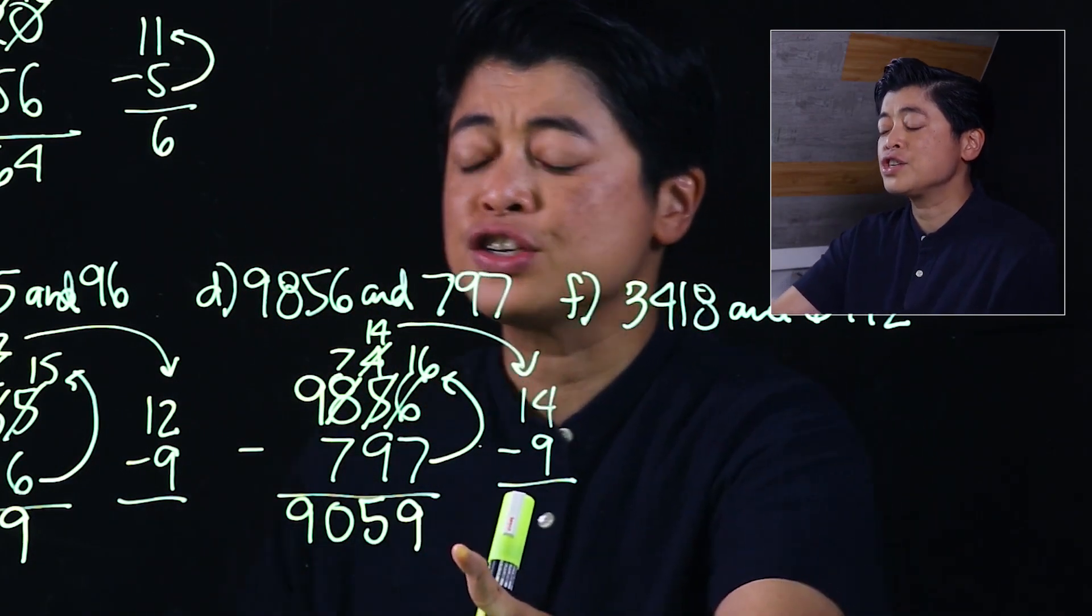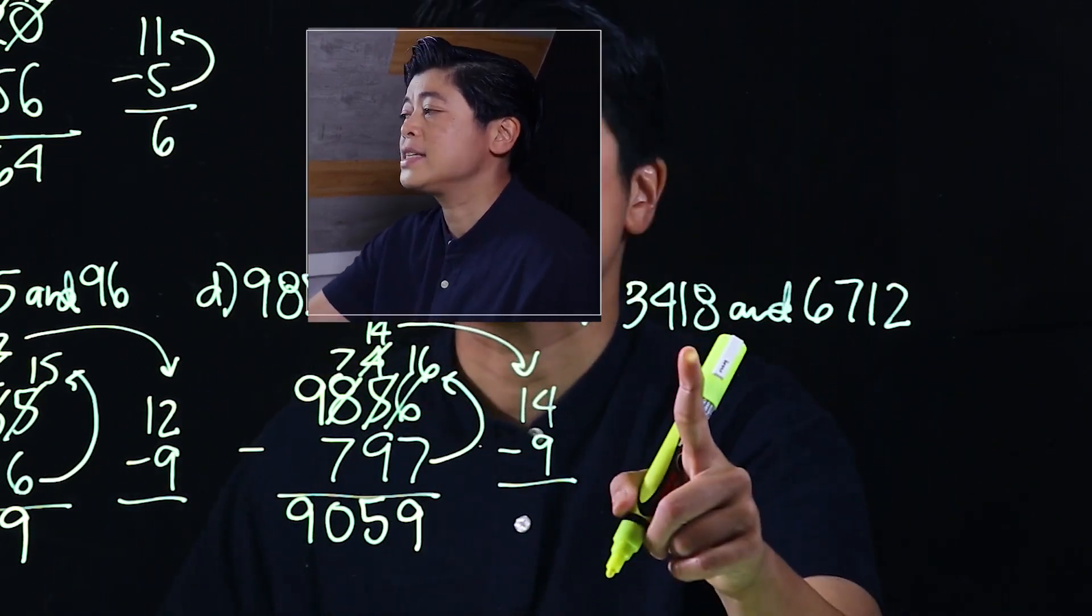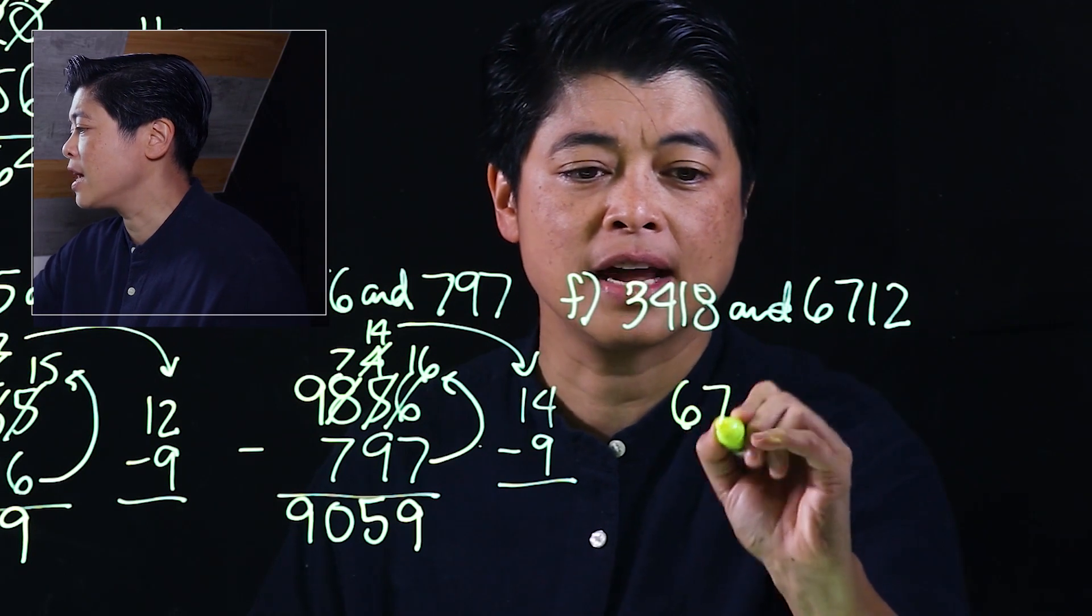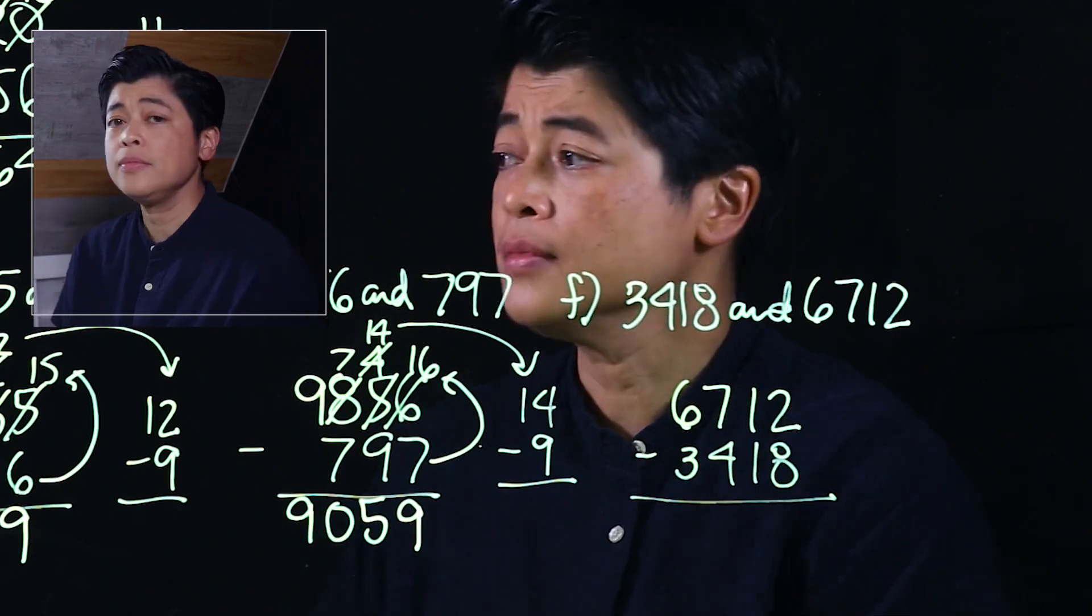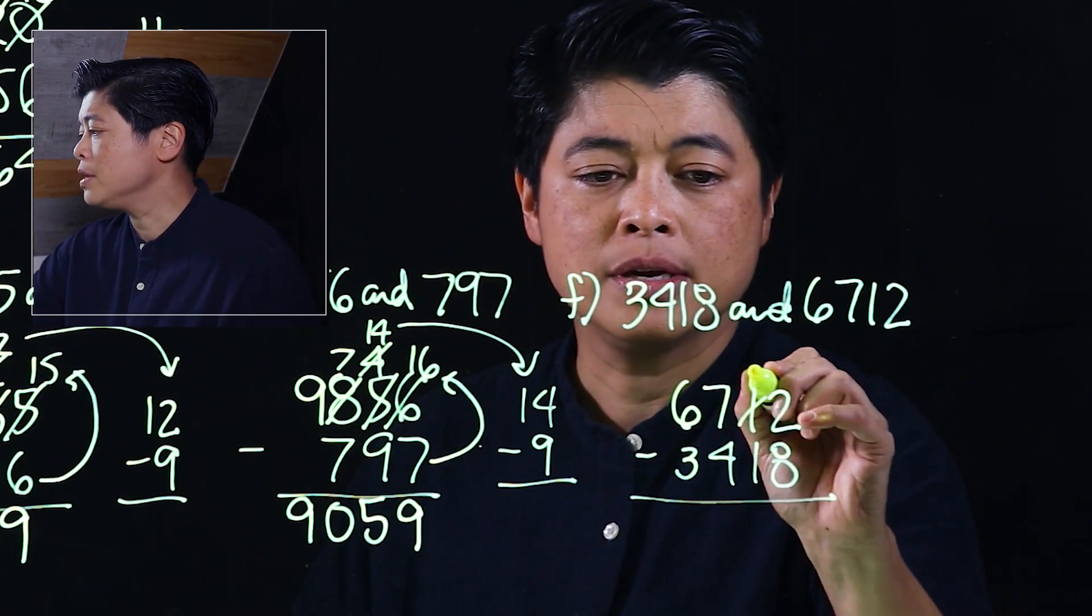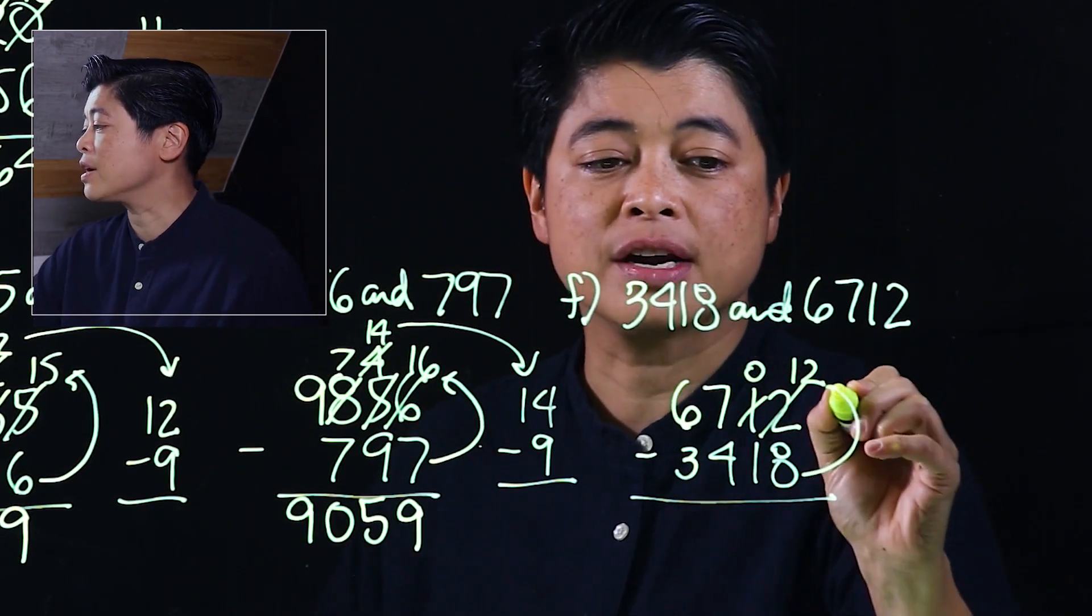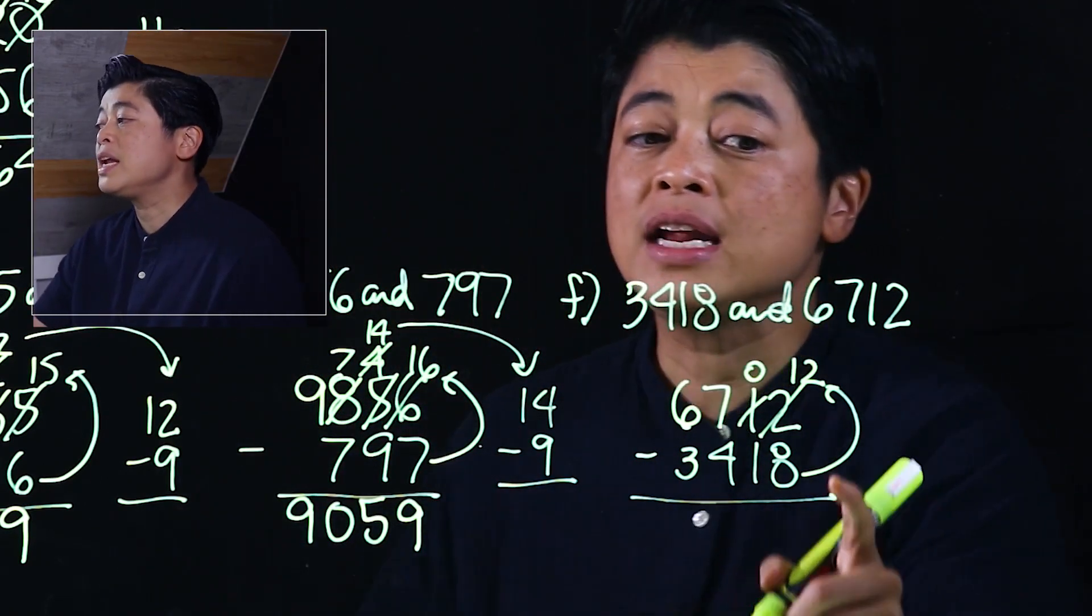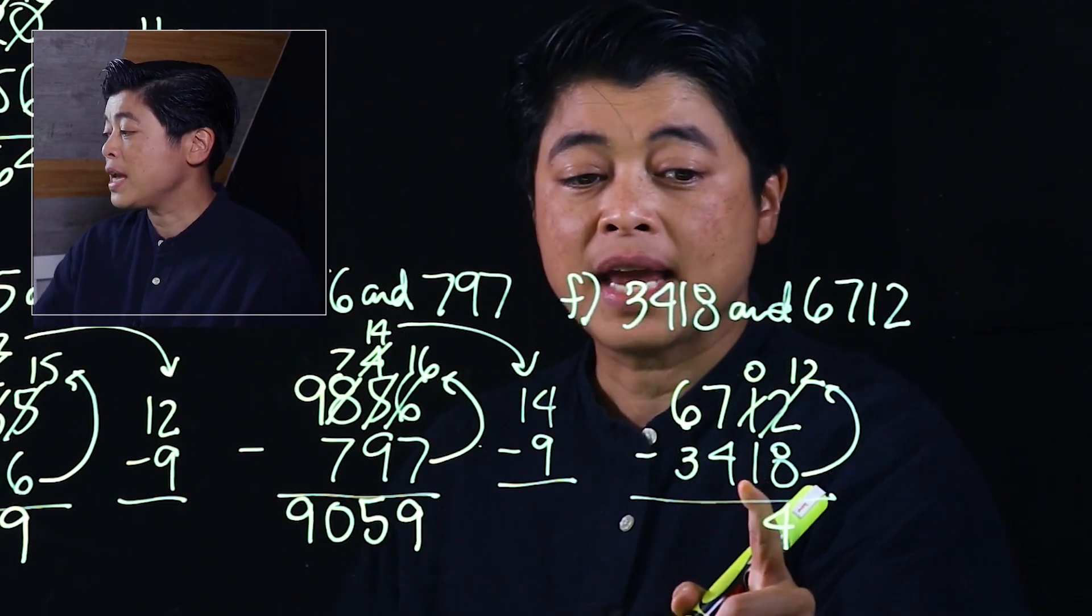Finally, it says find the difference. The bigger number should be on top: 6712 minus 3418. Cannot take away 8 from 2. Borrow 0, this becomes 12. So consistency says we start thinking: 8 needs 2, and then we need another 2 to make it to 12, so this must be 4.